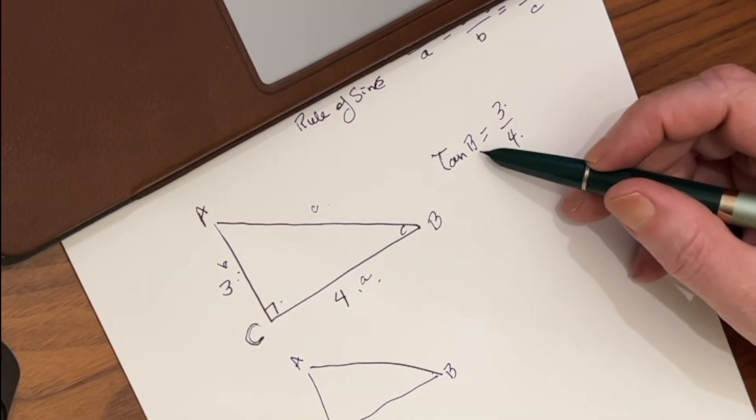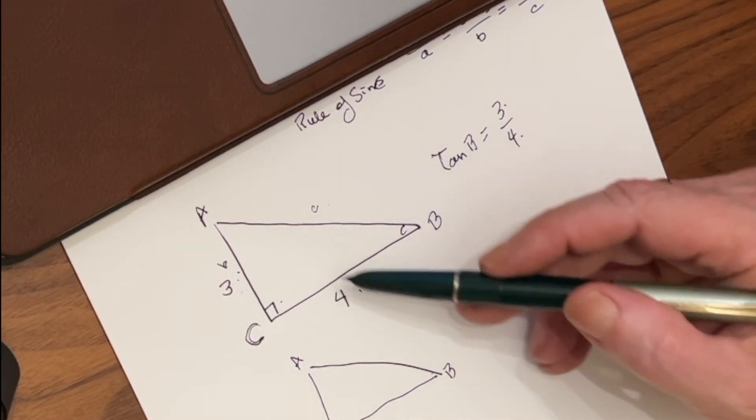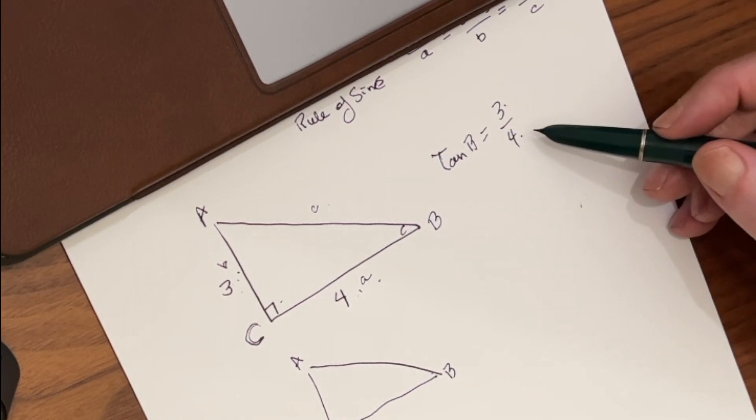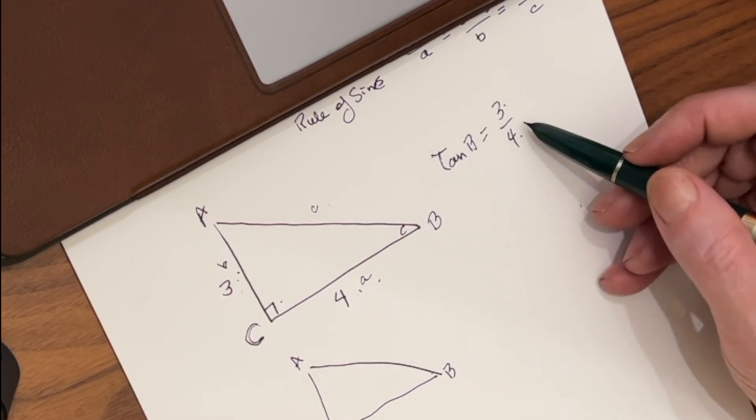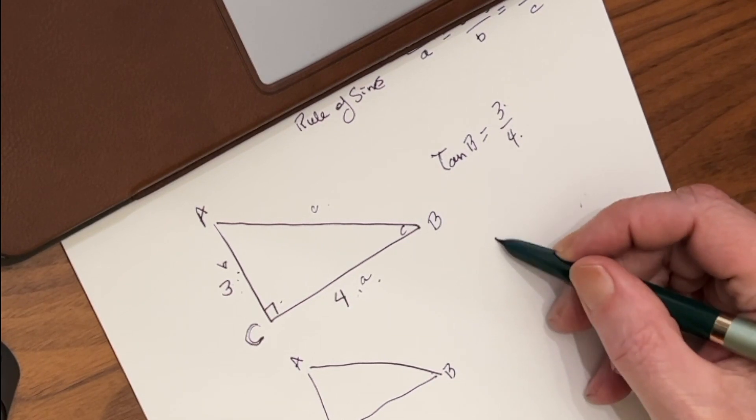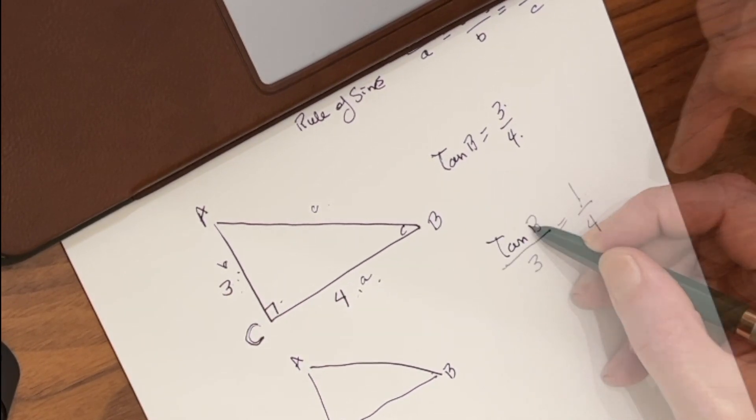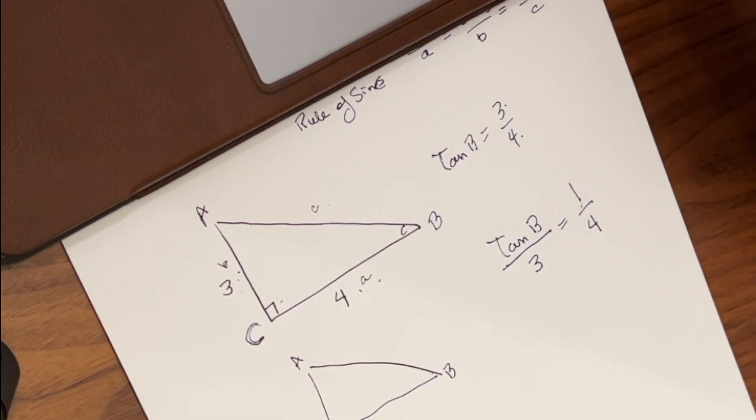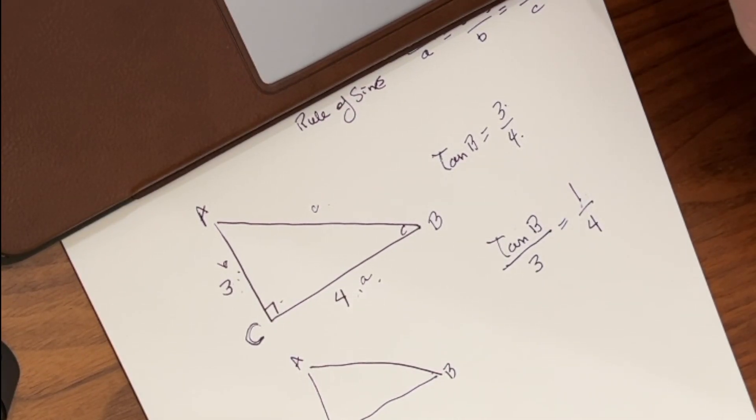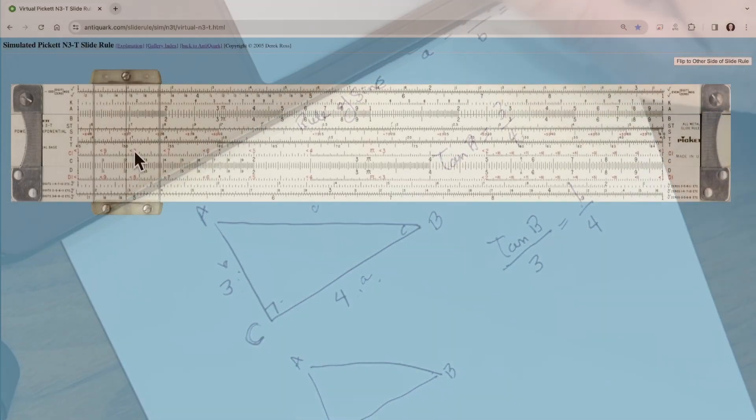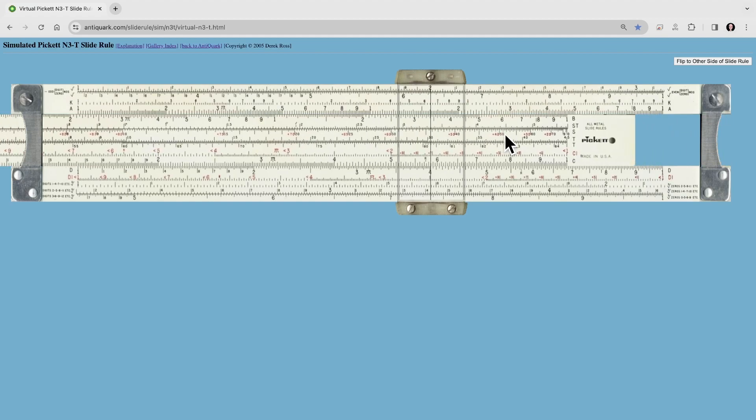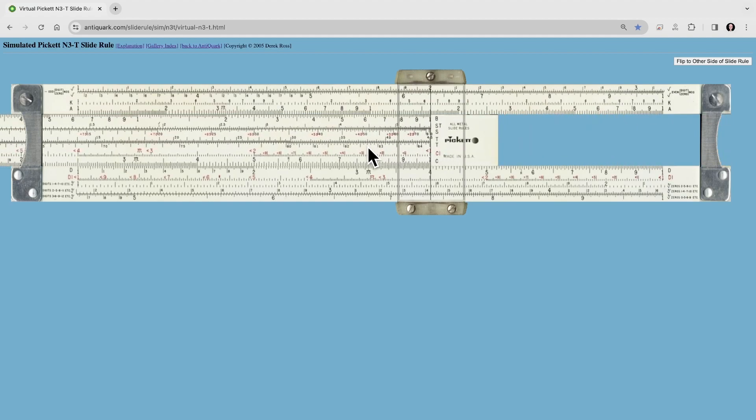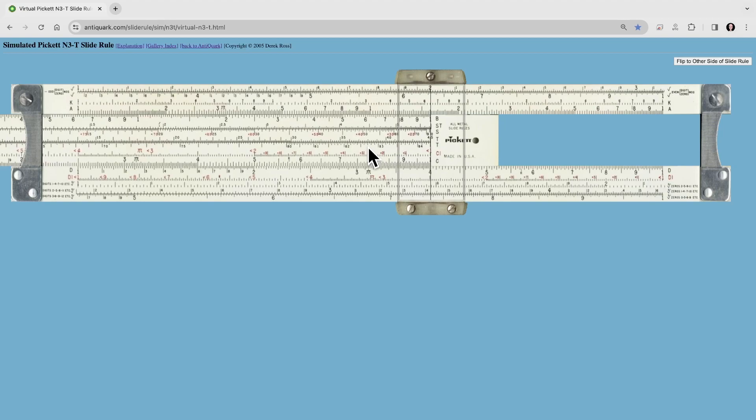So let's go to our paper and set this up. Here's our relationship for tangent B. It's going to be opposite side over adjacent side, or 3 over 4. We're going to divide both sides by 3, and we're going to come up with this equation. So we have tangent B over 3 equals 1 over 4. This is a very simple equation for us to set up on the slide rule. Let's go ahead and do that. We're going to set our cursor over 4, and we're going to bring the index directly over it. So there is our 1 over 4.